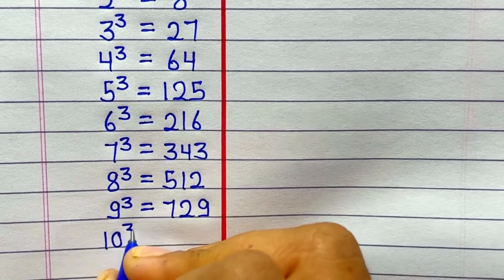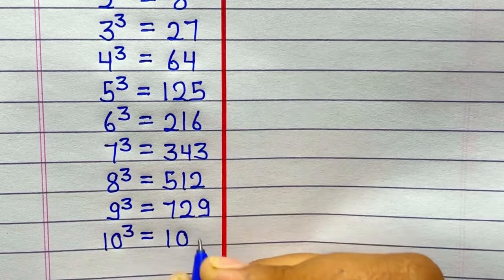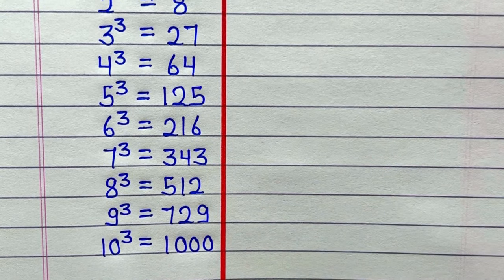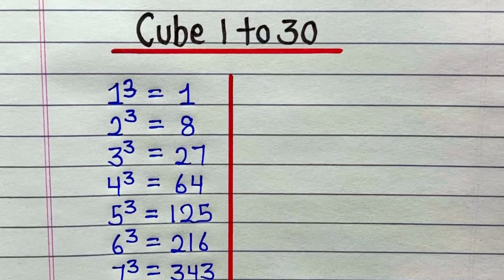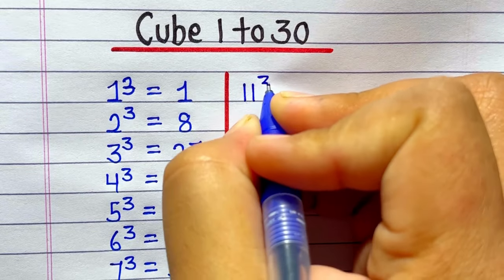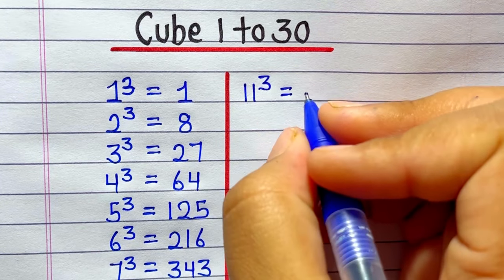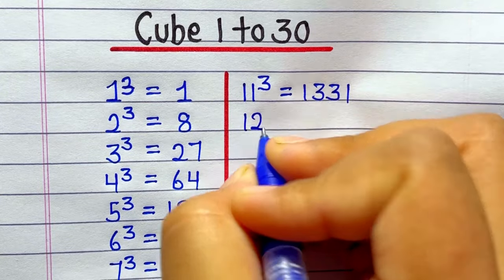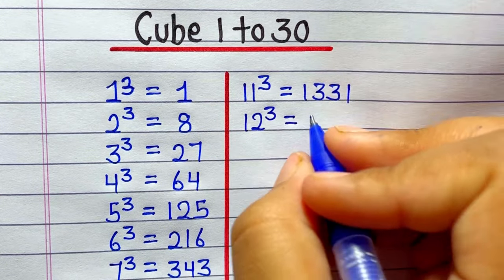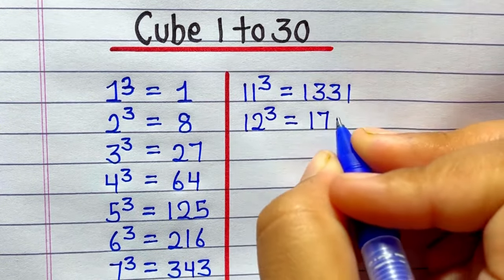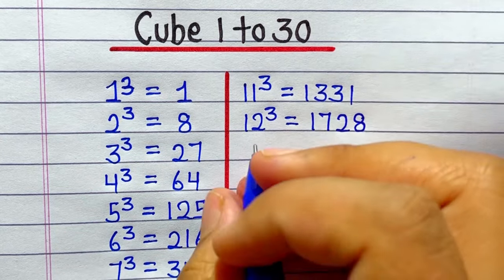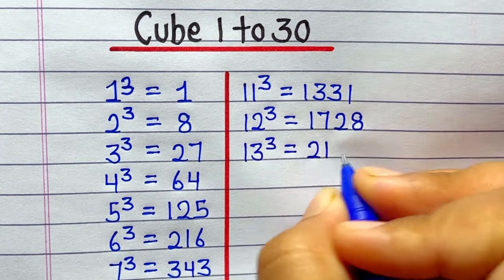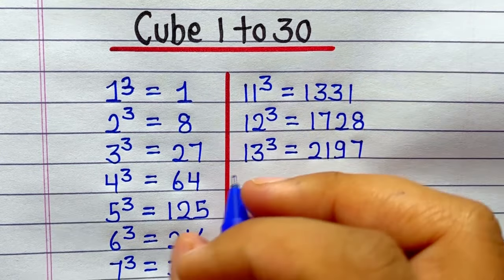10 ka cube hai 1000. 11 ka cube hai 1331. 12 ka cube hai 1728. 13 ka cube hai 2197.